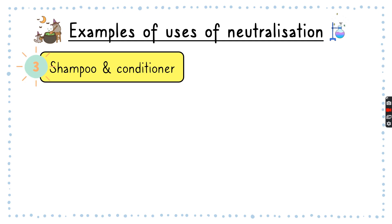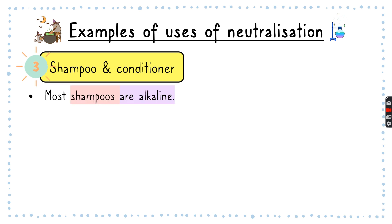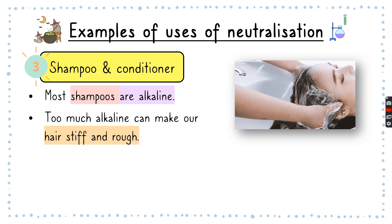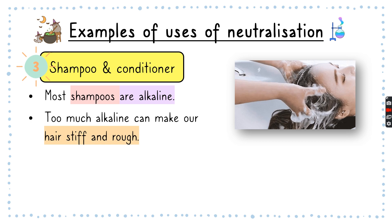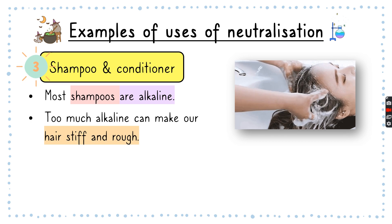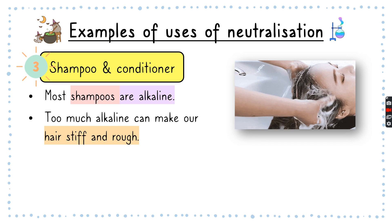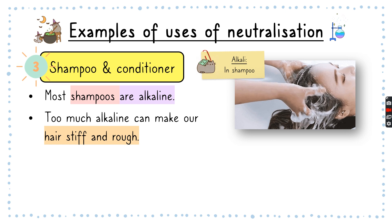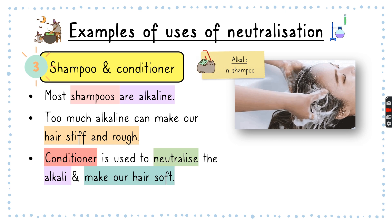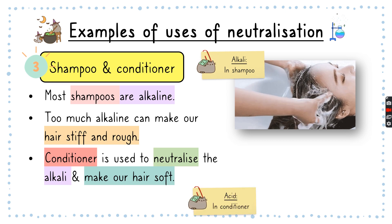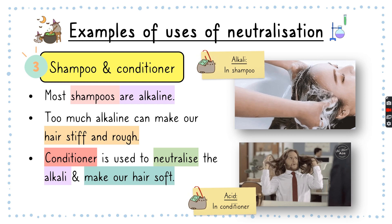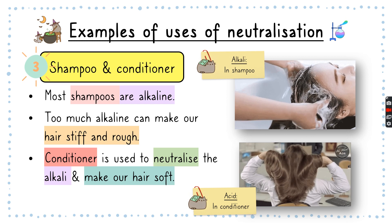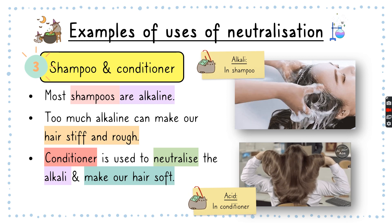Another example of neutralization is shampoo and conditioner. Most shampoos are actually alkaline, and having too much alkaline can make your hair very stiff and rough. So you can use conditioner to neutralize the alkali and make your hair softer — that's why when you use conditioner, your hair feels so much better.